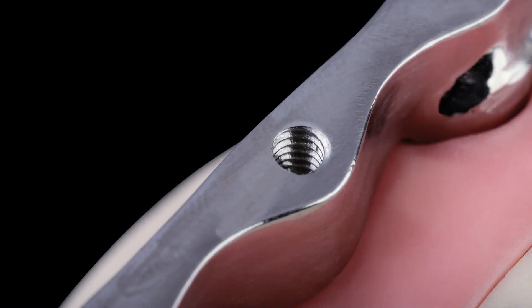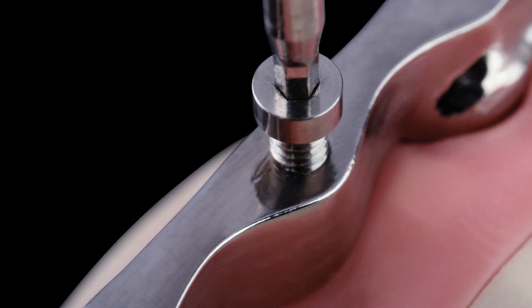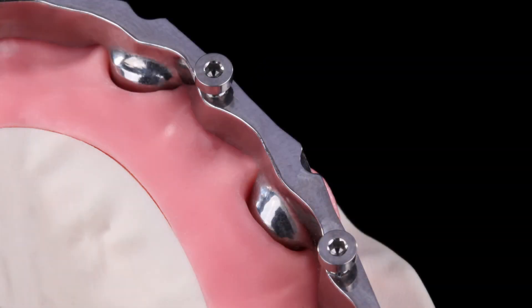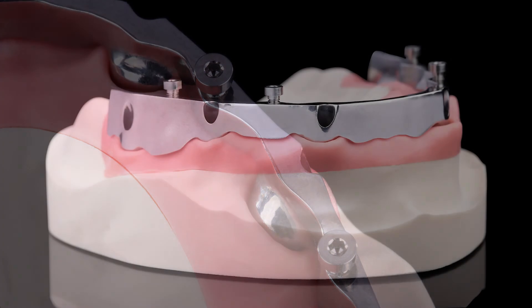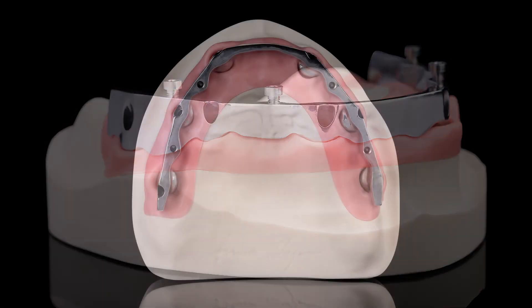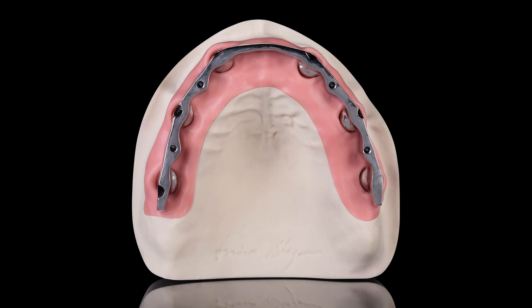The titanium bar was then screwed to the implants and the secondary structure to the bar. The integration of the double screw metal technique not only avoids unesthetic vestibular channels, but also improves post-operative maintenance and hygiene.